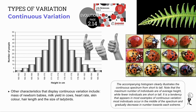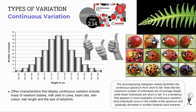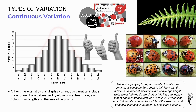In continuous variation, we often see extremes at either end. In this population group, there are very few short individuals and very few extra tall — most individuals are average height, as seen in the peak.